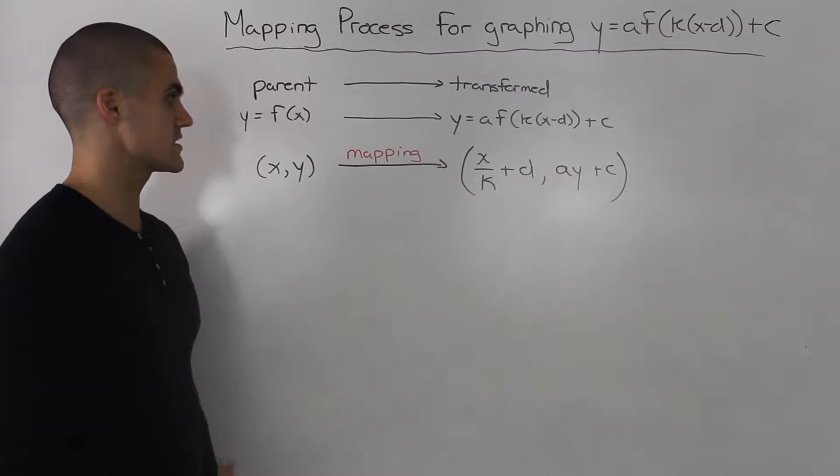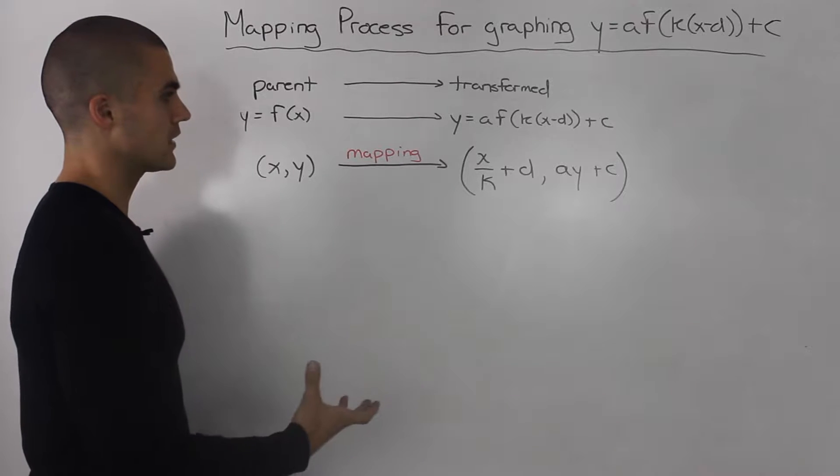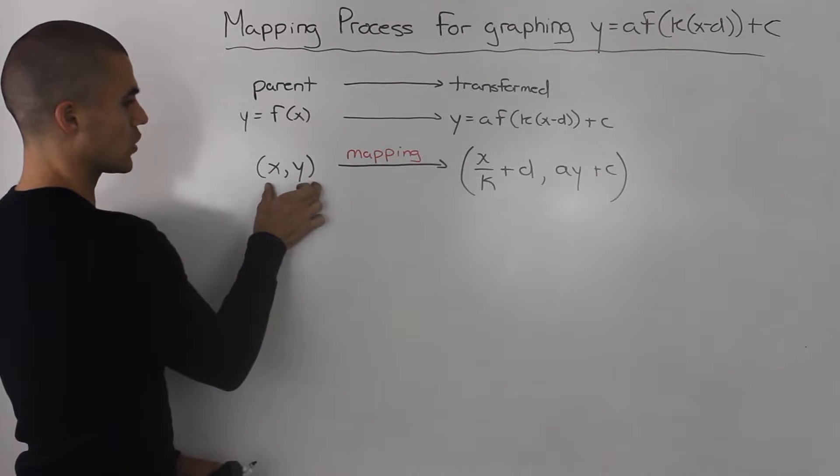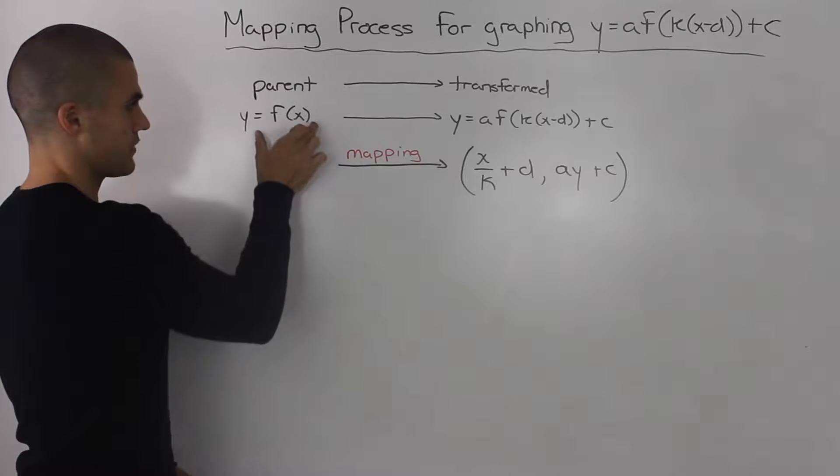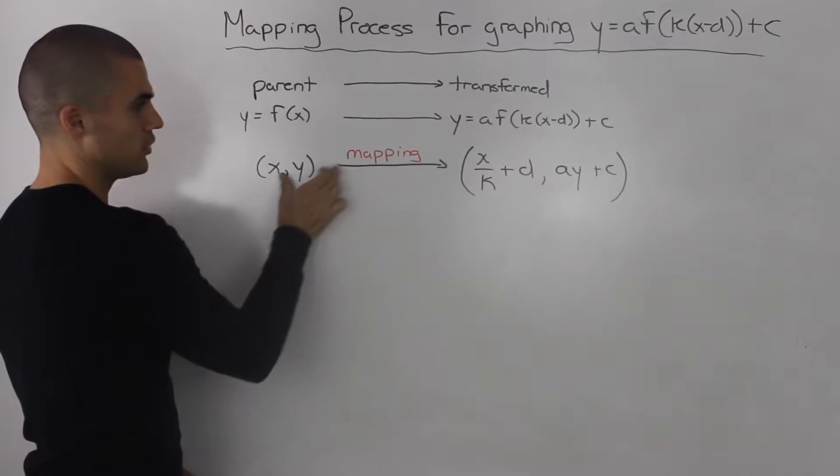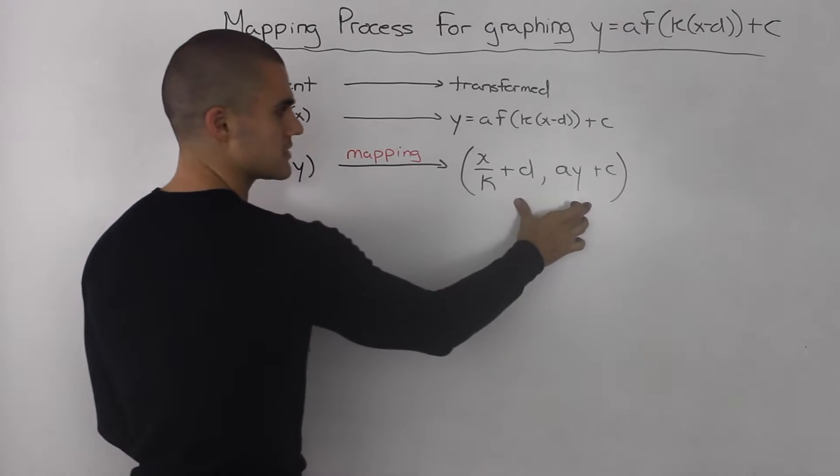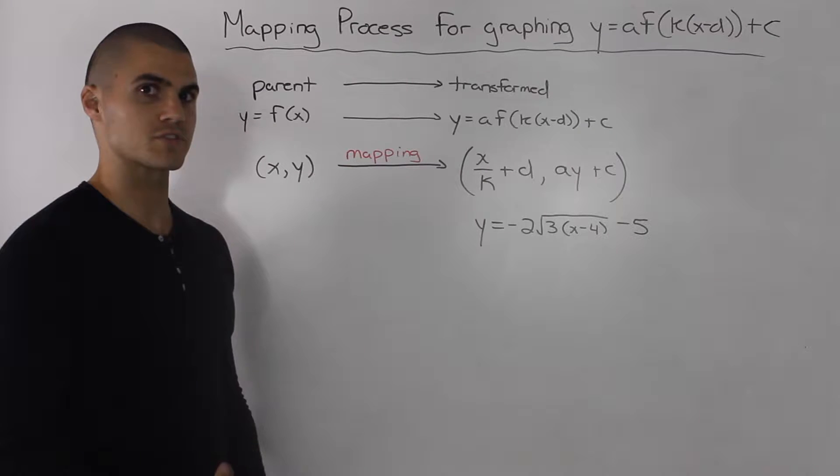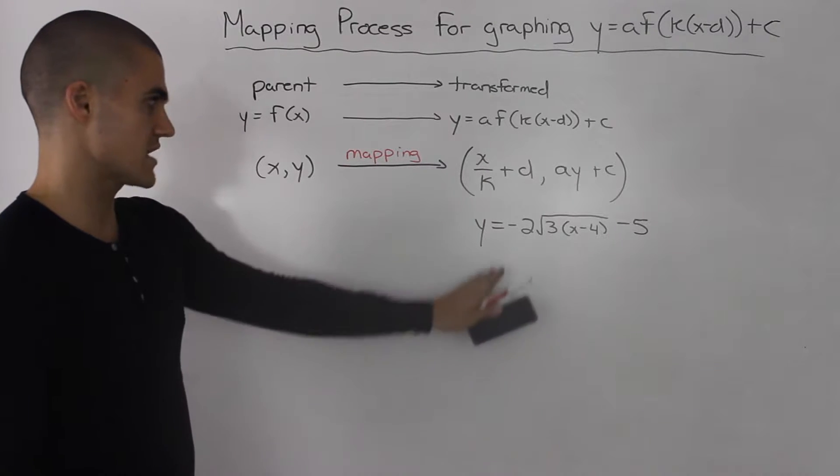To make this process as smooth as possible, we can do something called mapping. We can take coordinates or points off the parent function, put them through a mapping process, and then get points for the transform function. This whole process is honestly best shown through an example.